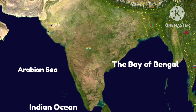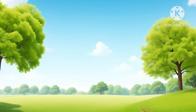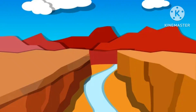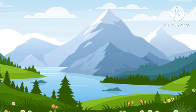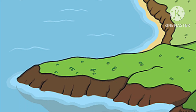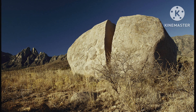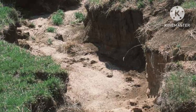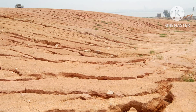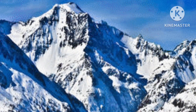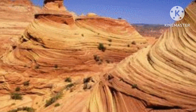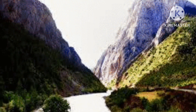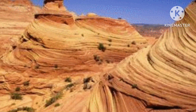Landforms are physical features formed on the earth's surface due to natural processes taking place regularly, like weathering and water erosion of the soil. There is a constant change in the shape of the earth; however, this shaping of earth's landforms doesn't happen overnight but takes thousands of years. Basically, landforms of the earth originate from natural geological processes.